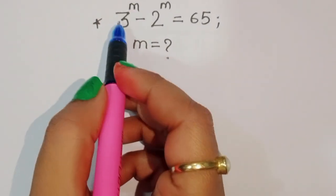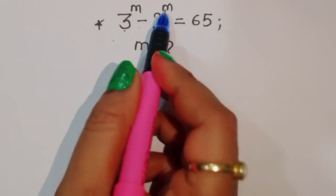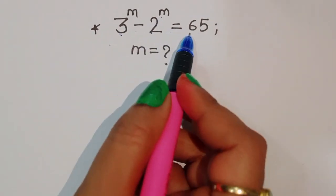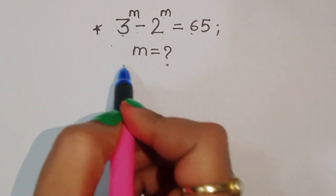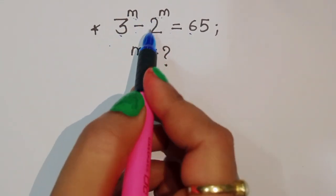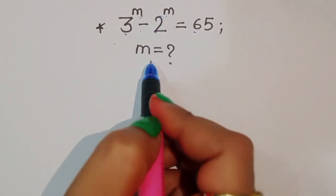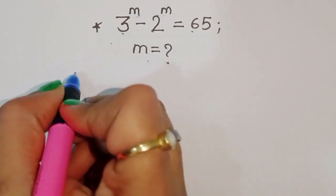The question is: given 3 power m minus 2 power m is equal to 65, we have to find out the value of m. Let's see the solution.